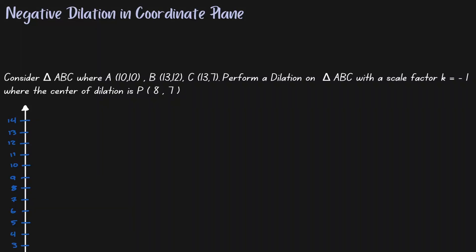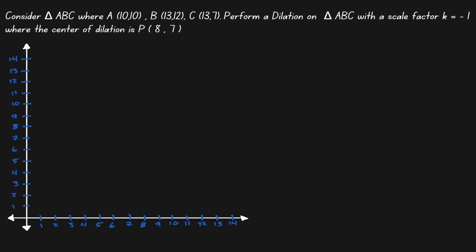Welcome. Let's discuss the idea of negative dilation in the coordinate plane. In this example, we're going to consider triangle ABC, where the coordinate points are (10,10), (13,12), and (13,7). What we want to do with this triangle is perform a dilation by a scale factor of negative 1, where the center of dilation is at (8,7). Because we're talking about coordinate points, let's turn on our coordinate plane.